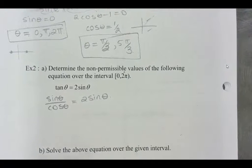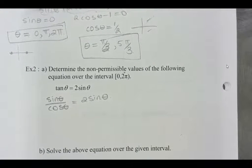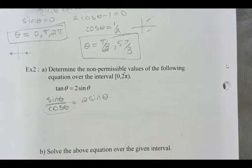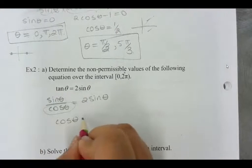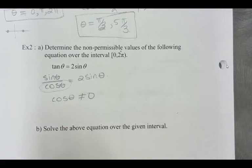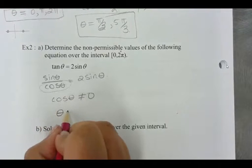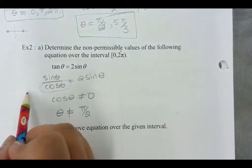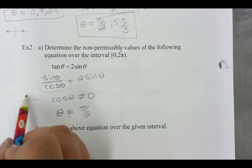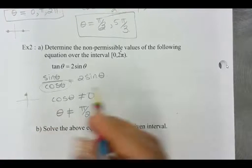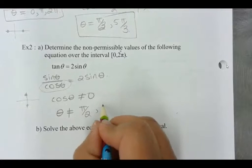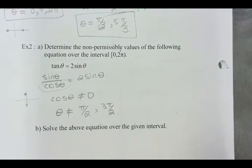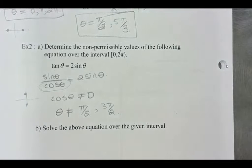What is going to cause non-permissible values here? If my denominator is equal to zero. So let's look for the solutions where cos theta is zero. Theta is not allowed to be pi over 2. And so let's make sure we're in our domain. So it's pi over 2 and then also over here. So that's going to be 3 pi over 2.